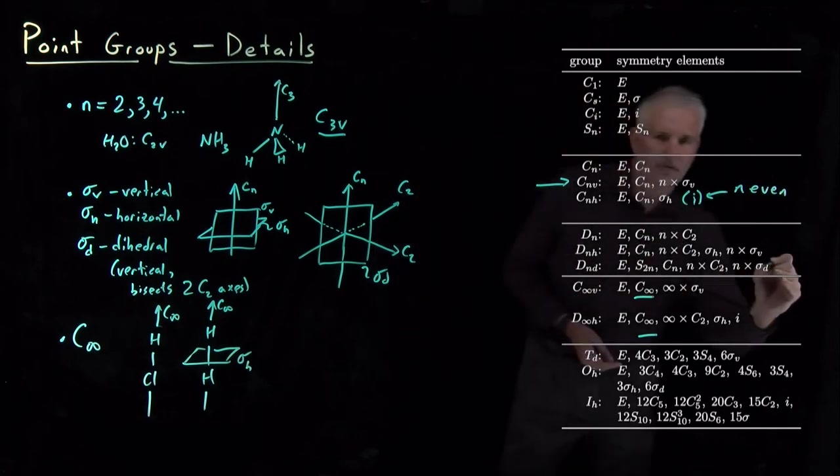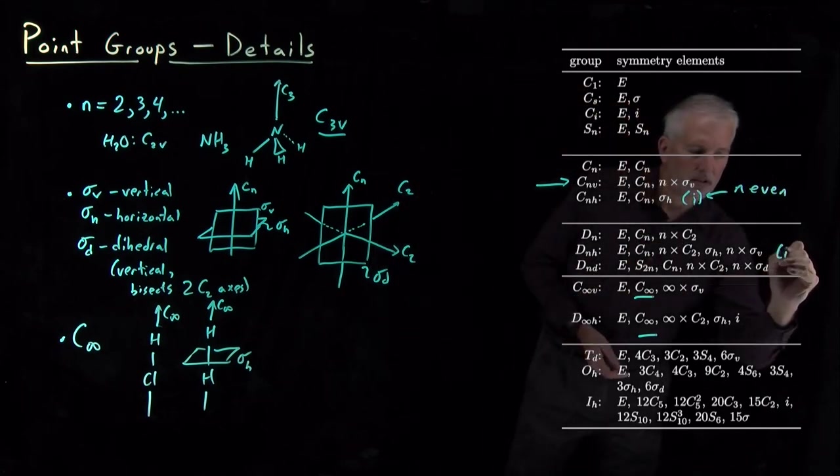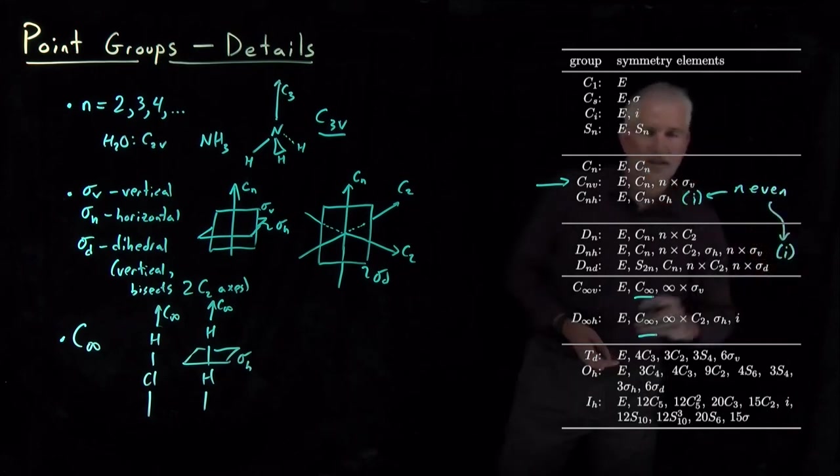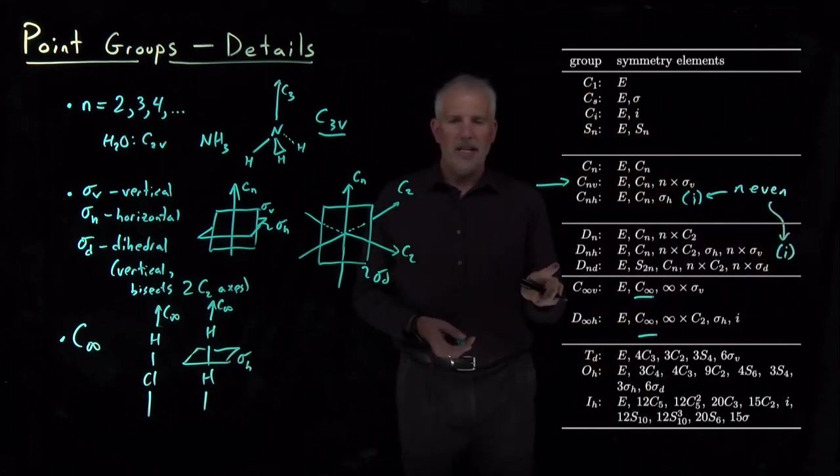DnH also has an inversion if N is even. But DnD is the opposite.